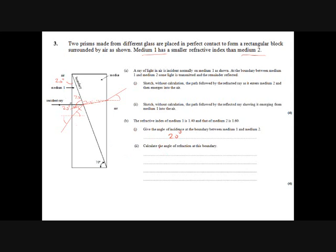Calculate the angle of refraction. Well, again, we're on N1 sine theta 1 equals N2 sine theta 2. So N1 has the refractive index of 1.4, so 1.4 times sine 20 equals 1.6 sine theta 2, so sine theta 2 equals 1.4 sine 20 over 1.6. Theta 2 equals 17.4 degrees.